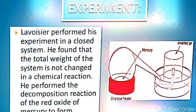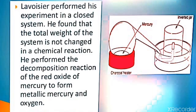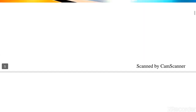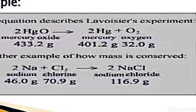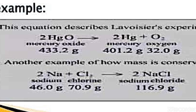Lavoisier performed an experiment in which he took HgO and decomposed it to give Hg and O₂. He weighed the initial mass of HgO and after decomposition found the mass of Hg and O₂. He found that the sum of the masses of the products equals the mass of the reactant. Mercuric oxide has a mass of 433.2 grams, and Hg and O combined again give 433.2 grams.